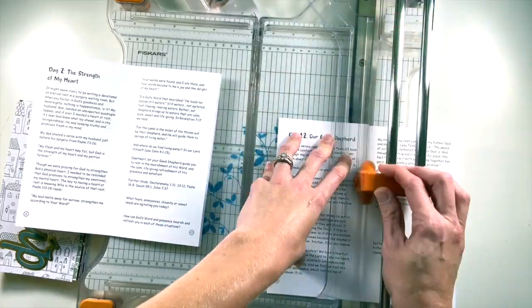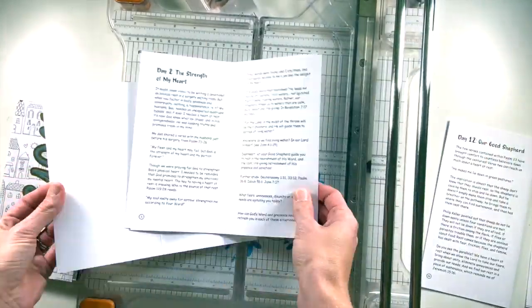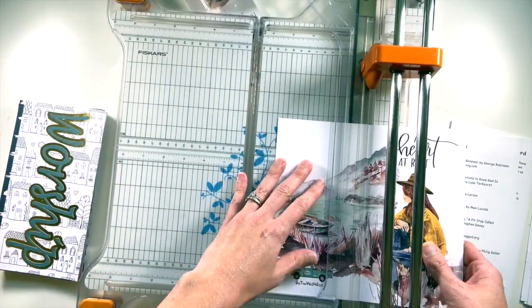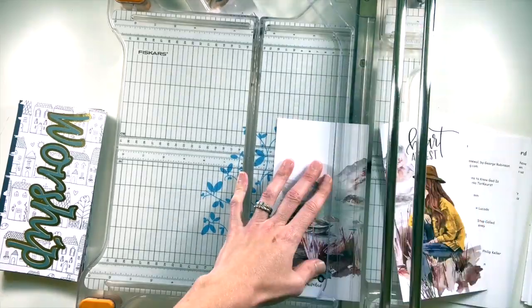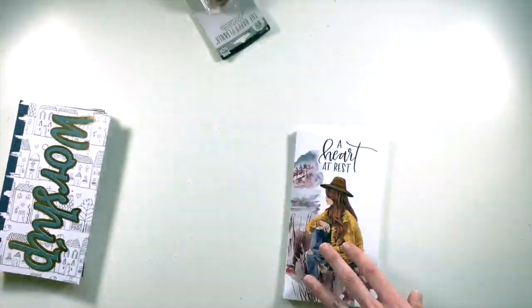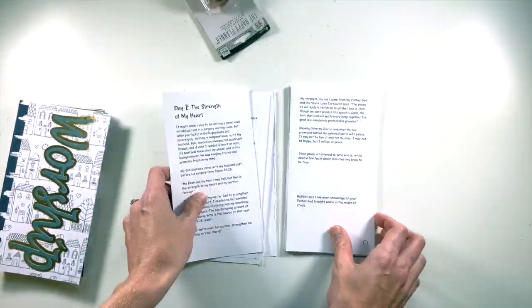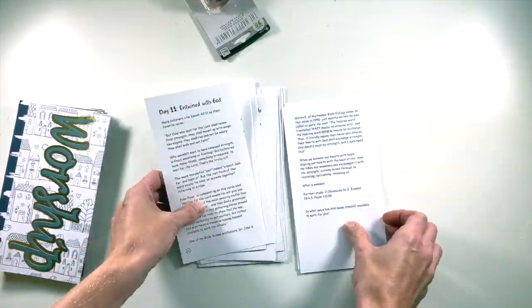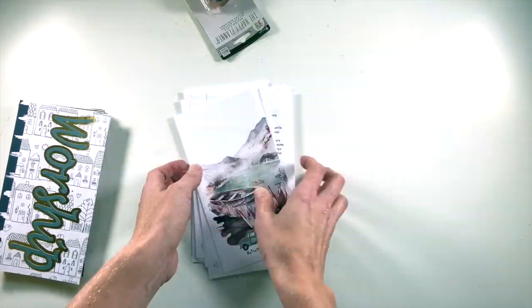It's a Fiskars paper cutter. I love it. I like that it gets smaller when I put it away, so it works really well for me. I am simply just cutting the devotional in half, being really careful as I cut it in half, making sure I'm right in the middle right where the fold already was. Then I go through and check and make sure I have all the pages in the right order before I start hole punching them.